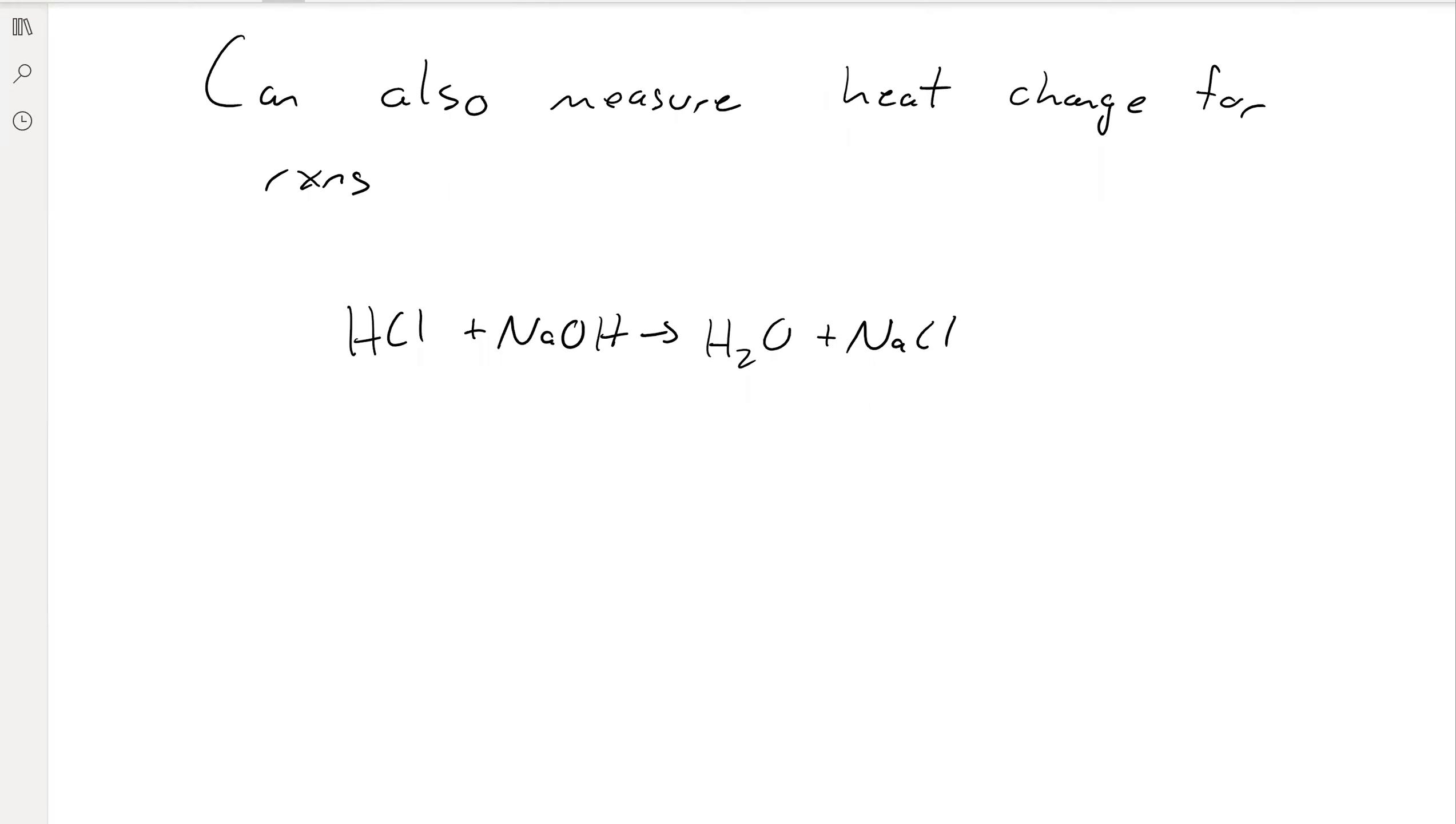We don't have to do such simple things as dumping a hot piece of metal into water. We can also look at chemical reactions, and this is obviously done in real life. For example, in this neutralization reaction we have HCl reacting with NaOH to do this neutralization reaction and that's going to produce heat.